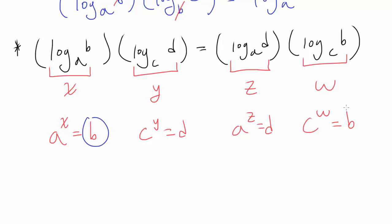Notice that A to the x equals B, and C to the w also equals B, so A to the x equals C to the w. Another thing you can realize: C to the y equals D, A to the z equals D, so C to the y equals A to the z.